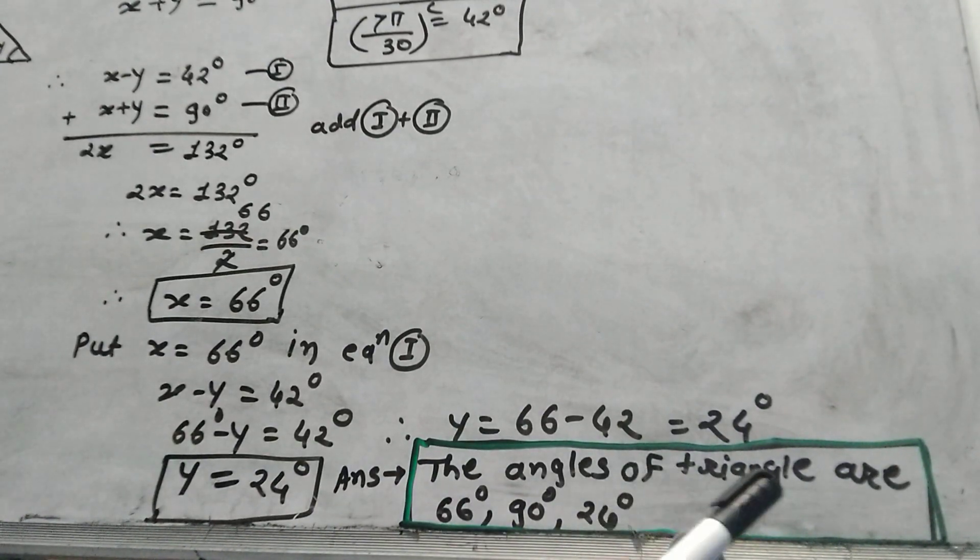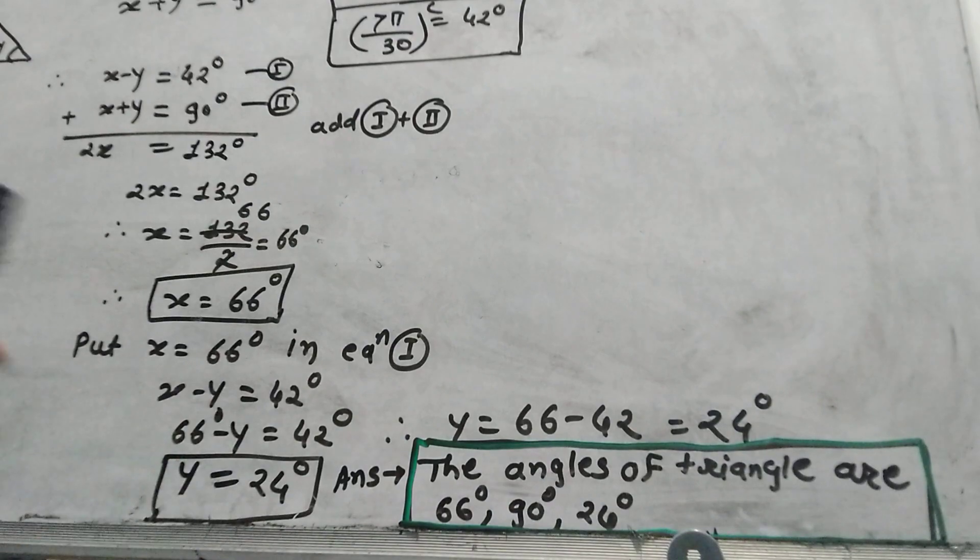The answer is: the angles of the triangle are 66 degrees, 90 degrees, and 24 degrees.